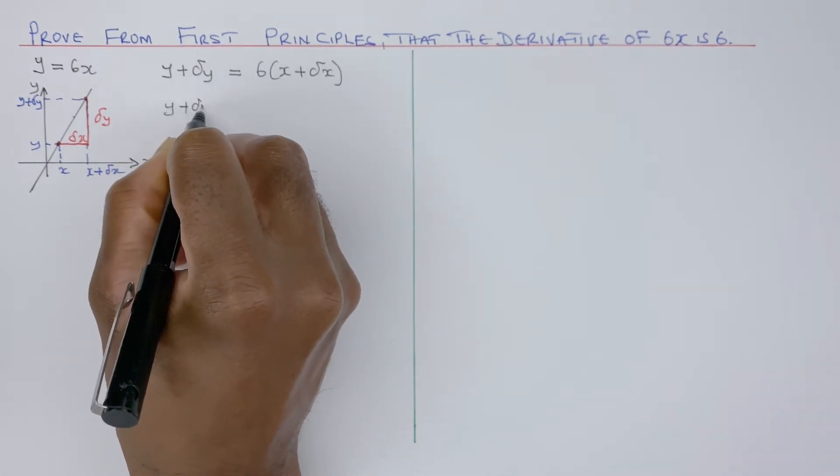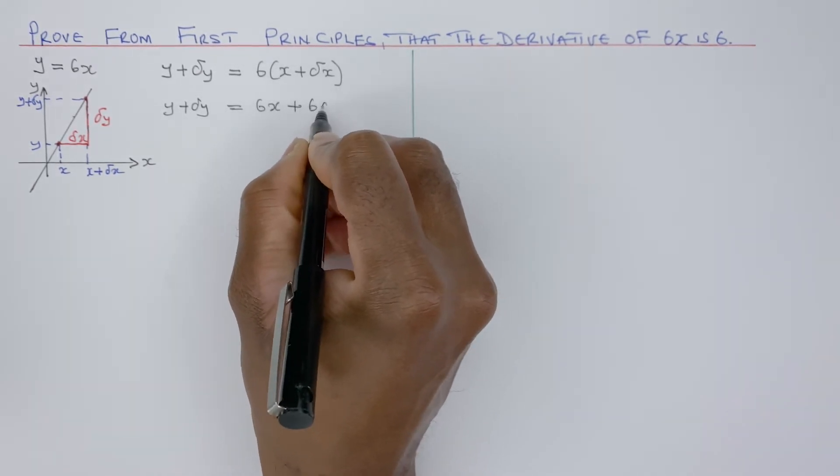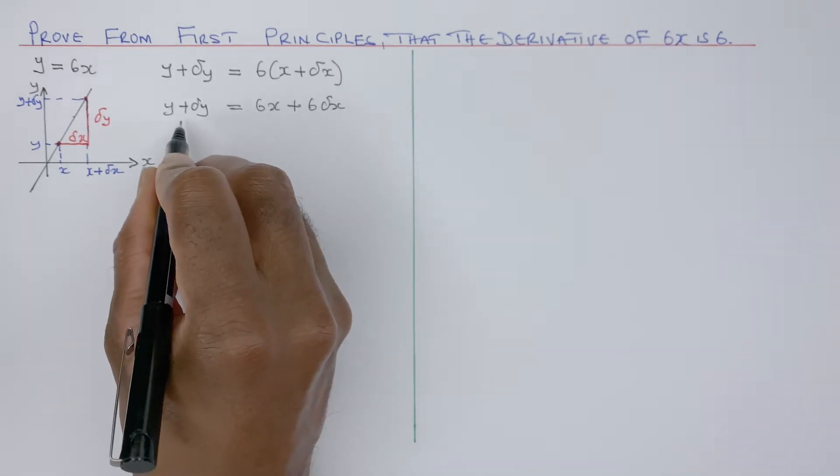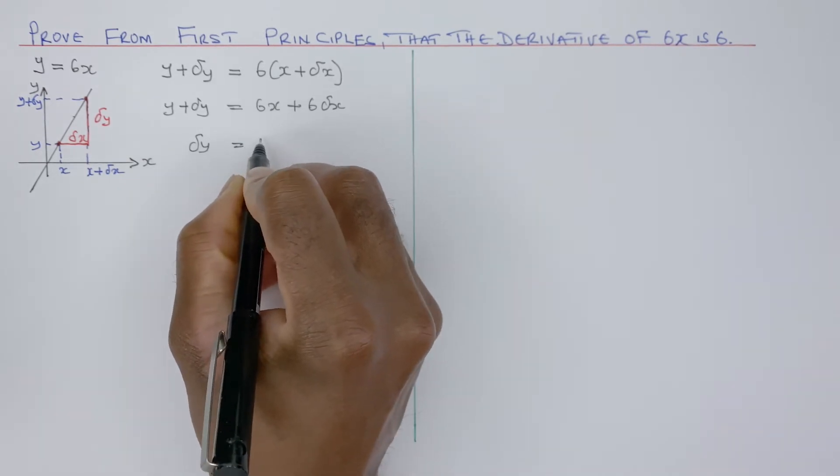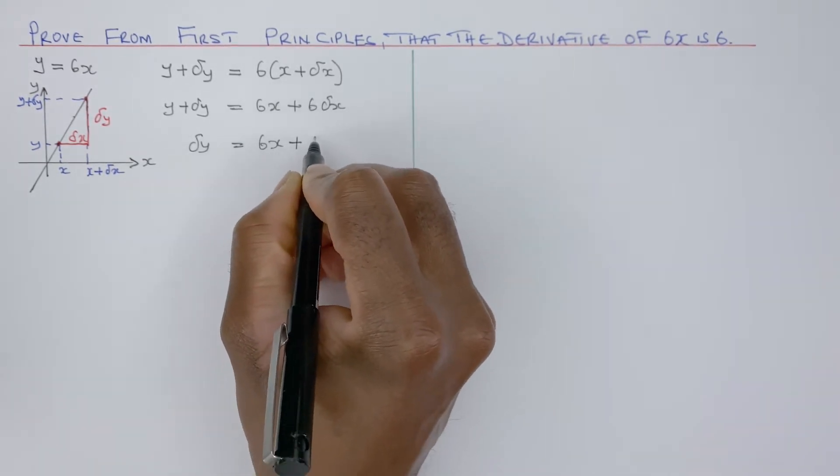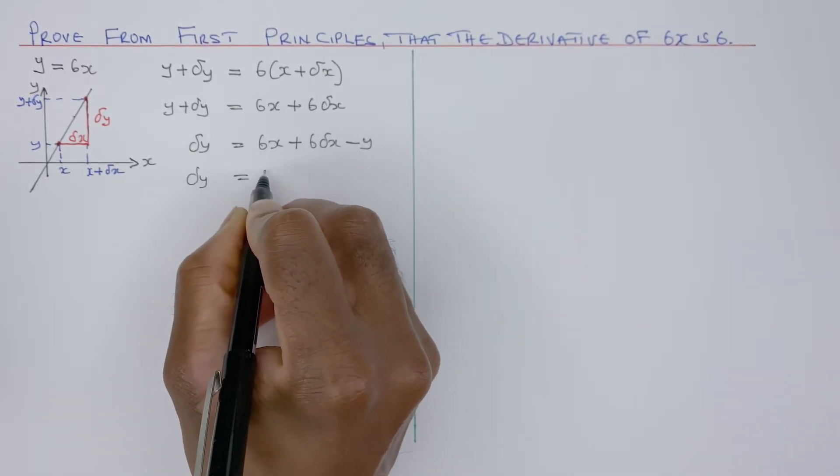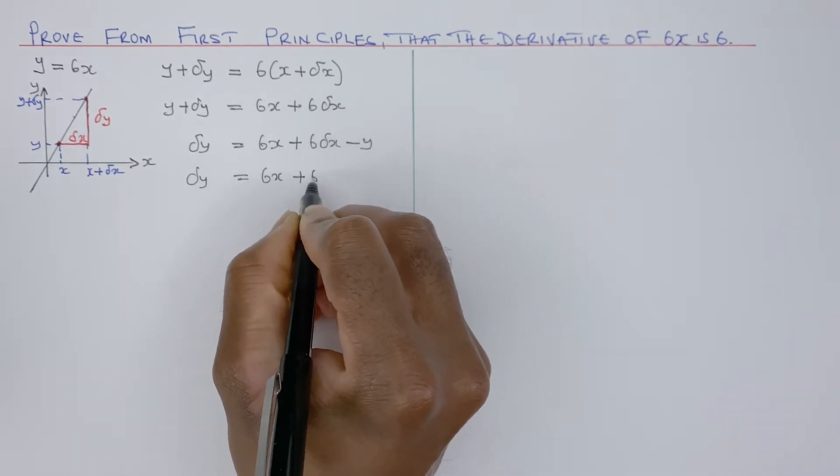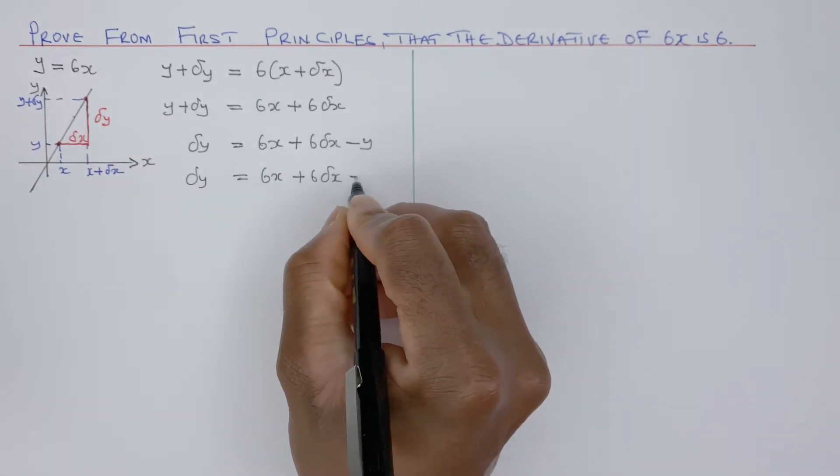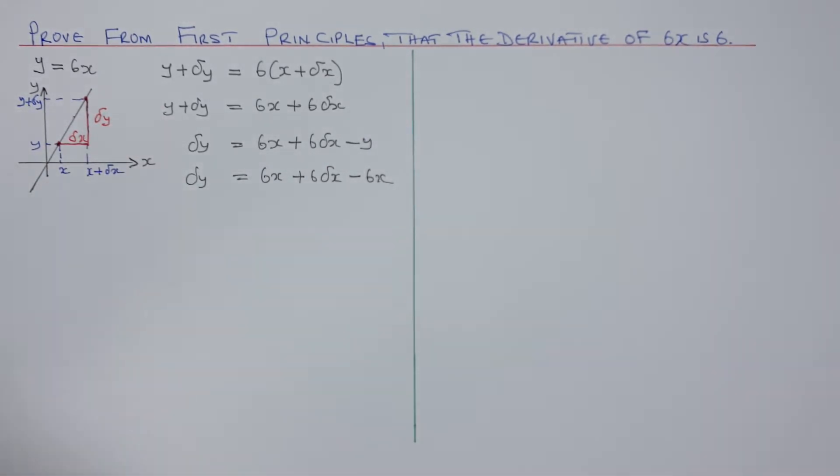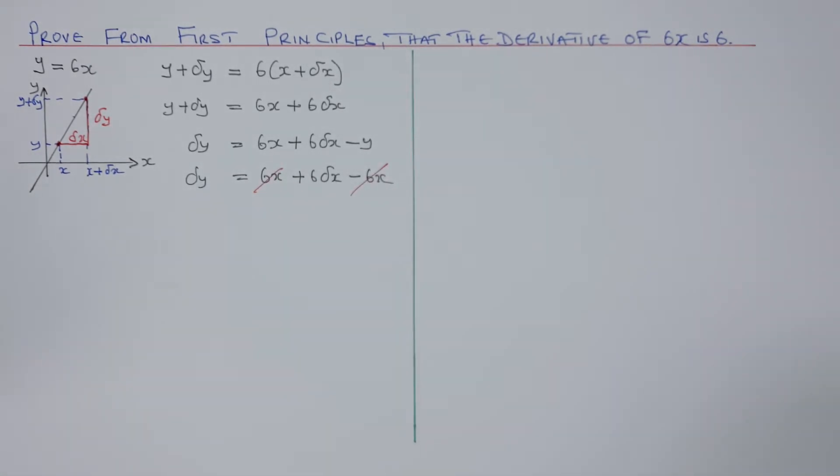So I need to expand that one. So I get y plus delta y equals 6x plus 6 delta x. And I need to make delta y the subject. So delta y equals 6x plus 6 delta x minus y. Now, y is 6x, so that's minus 6x.